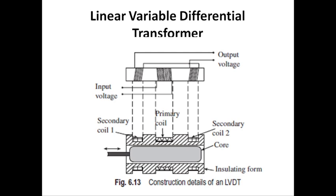LVDT — Linear Variable Differential Transformer. An LVDT provides an alternating current voltage output proportional to the relative displacement of a transformer core with respect to a pair of electrical coils. It provides a high degree of amplification and is very popular because of the simplicity of its usage. Moreover, it is a non-contact device where there is no physical contact between the plunger and the sensor. As a consequence, friction is avoided resulting in better accuracy and longer life for the instrument.